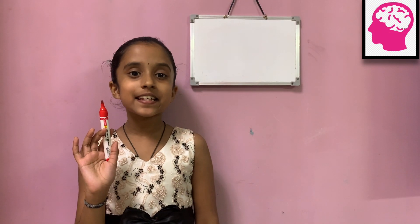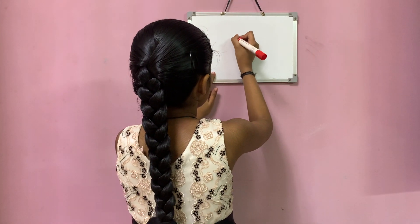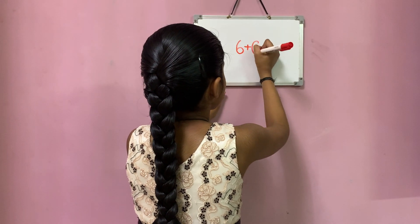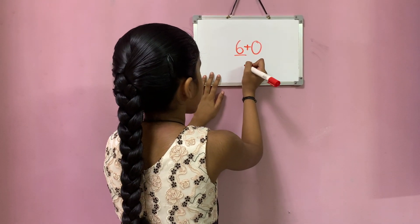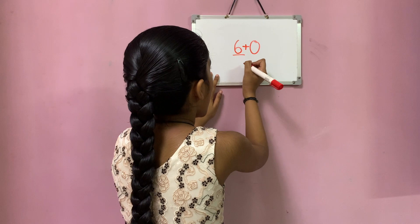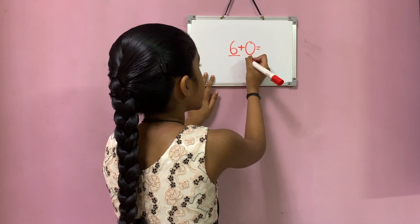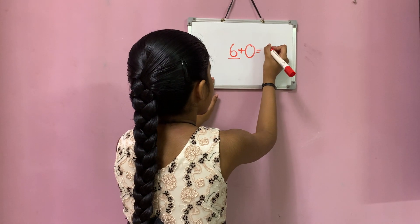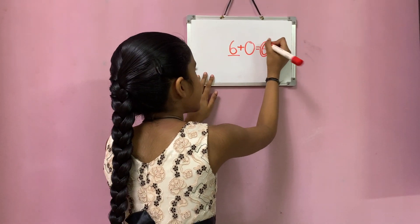Now let's see six plus zero. Here six is the big number and zero is the small number. But since zero does not have any value, you simply write six. So six is the answer.